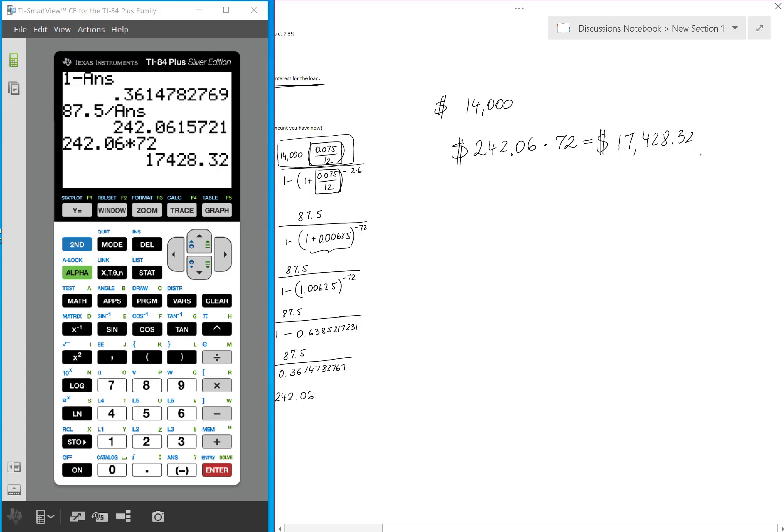So this equals 242.06 times 72 equals 17,428.32. Whenever we are working with money, we use two decimals. Right? Because those are the cents. 32 cents.